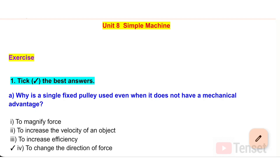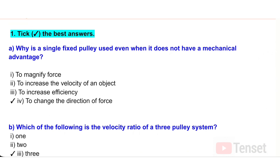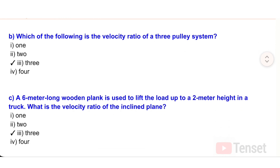Unit 8: Simple Machines. Exercise 1 — Tick the best answers. Question A: Why is a single fixed pulley used even when it does not have a mechanical advantage? Options: i) to magnify force, ii) to increase the velocity of an object, iii) to increase efficiency, iv) to change the direction of force.